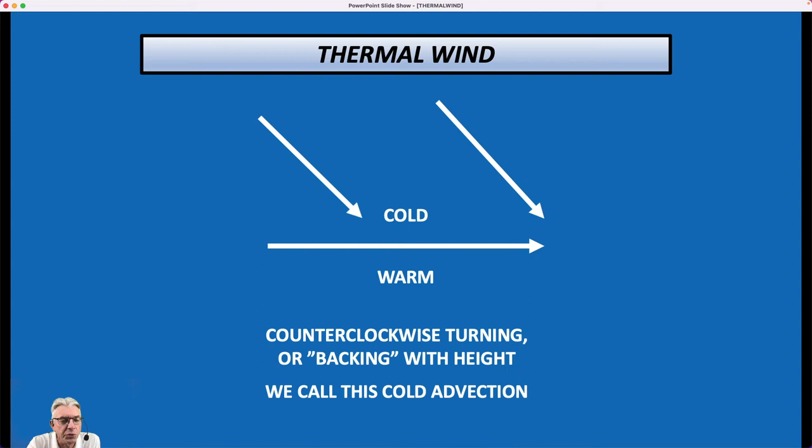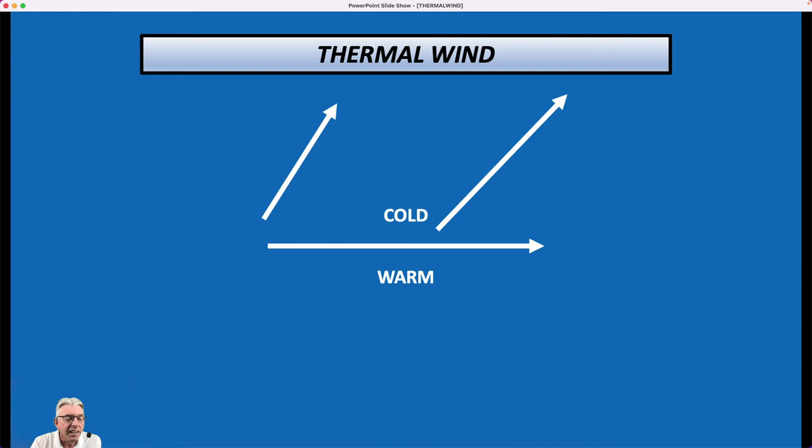And the opposite is true as well. Let's suppose that we have the thermal wind with cold air to the north, warm air to the south, but this time we have a south wind at the surface and a southwest wind in the upper atmosphere. And what did that surface wind have to do in this case to get like the one at 5,000 feet?